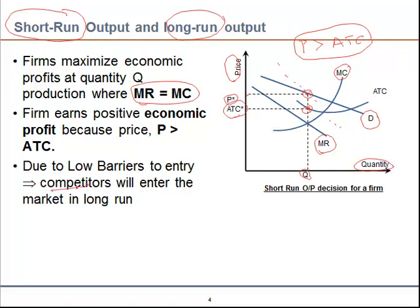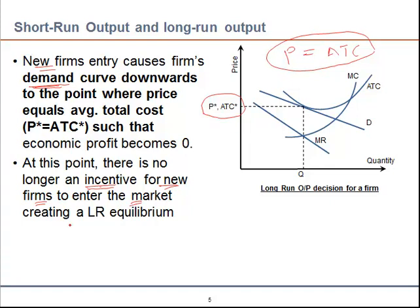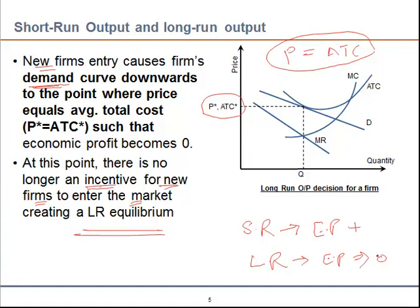As firms are getting economic profits, more competitors will be interested to enter the market. As new firms enter, that will shift the demand curve downward until the price equals average total cost. When price equals average total cost, economic profit becomes zero, indicating there is no incentive for new firms to enter in long run equilibrium. In short, in the short run, monopolistic competition firms may earn positive economic profit, but in the long run, economic profit becomes zero.